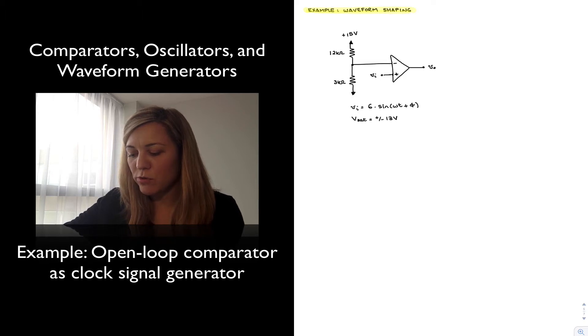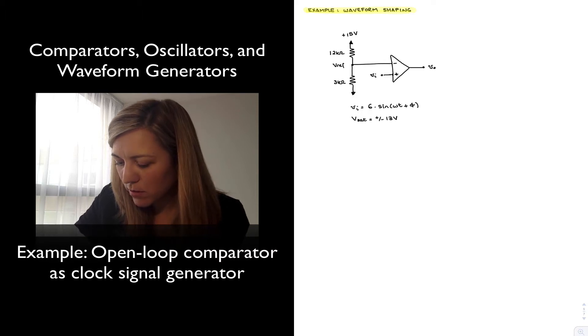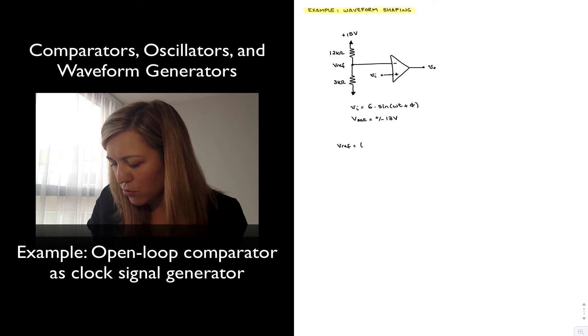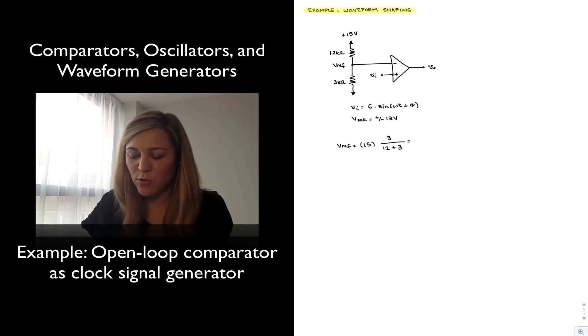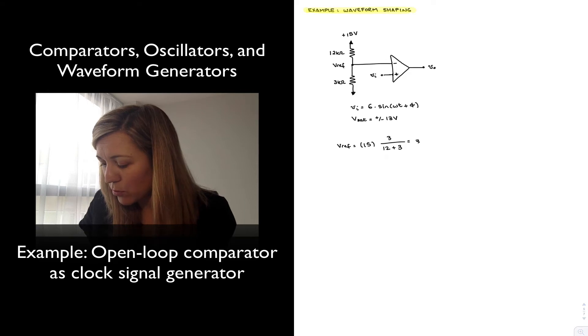Through resistors of 12 kilo ohms and 3 kilo ohms, my reference voltage Vref is going to be equal to 15 volts times 3k divided by 12k plus 3k, or 15 times 3 divided by 15, which is equal to 3 volts.